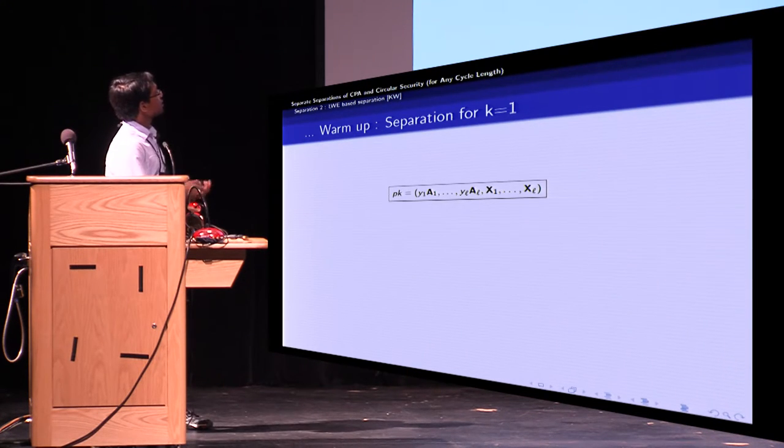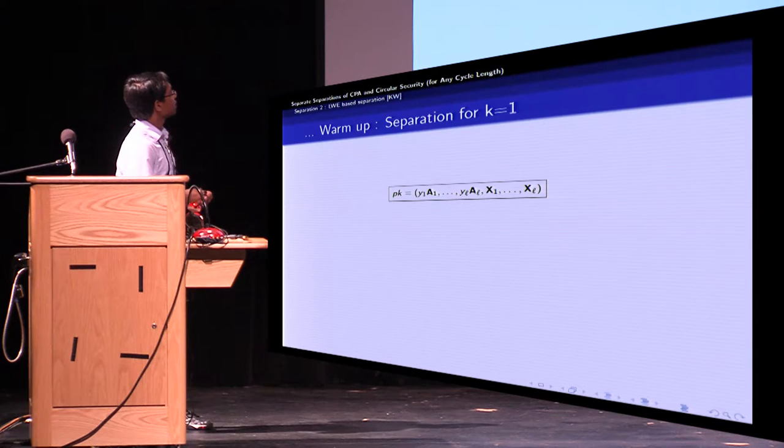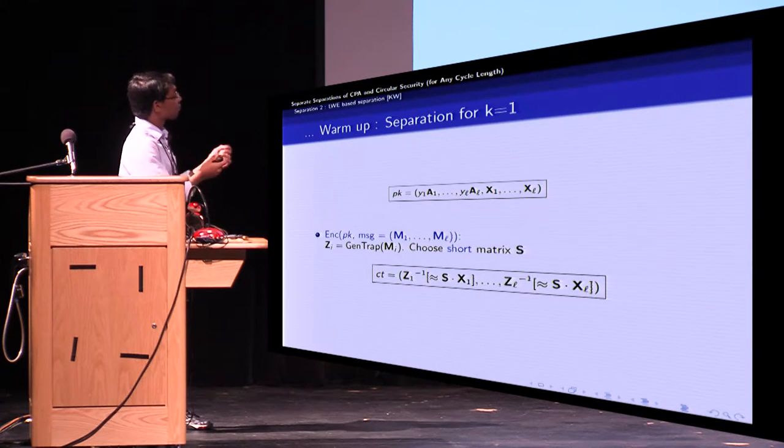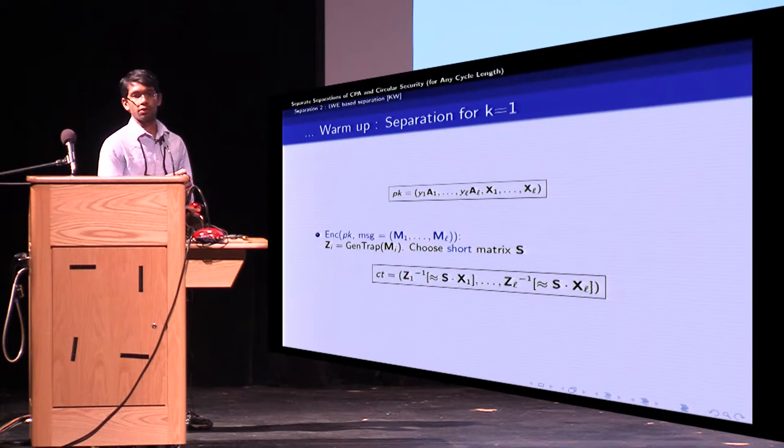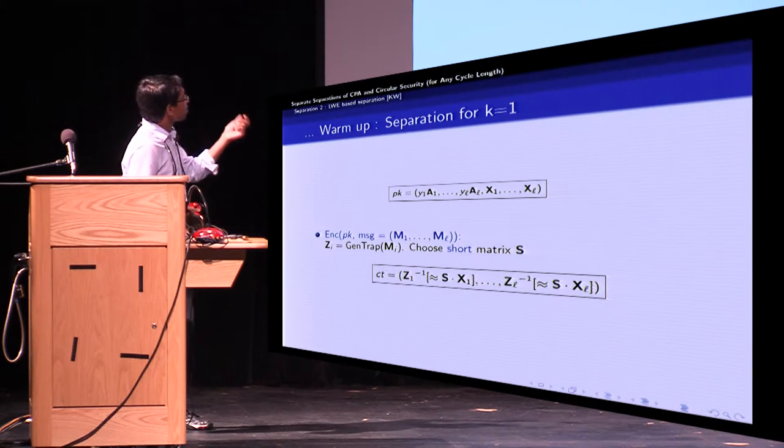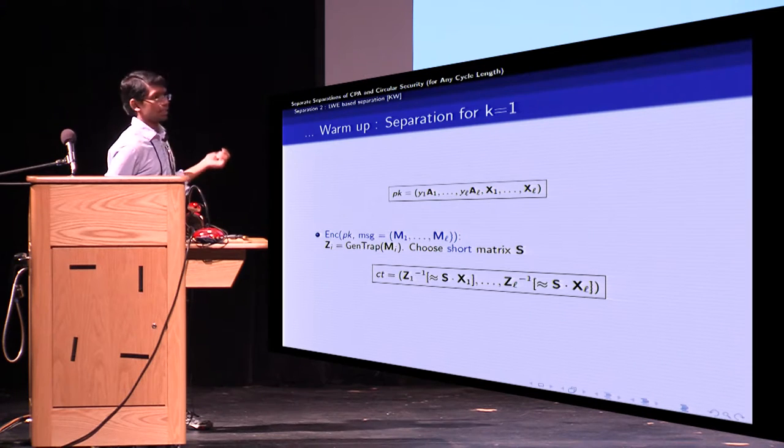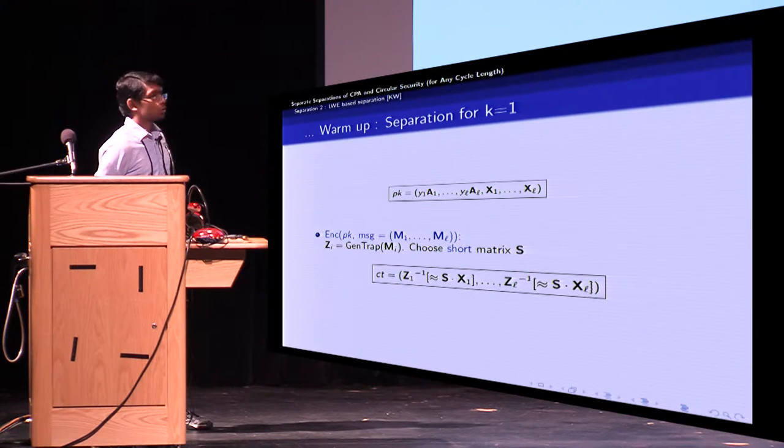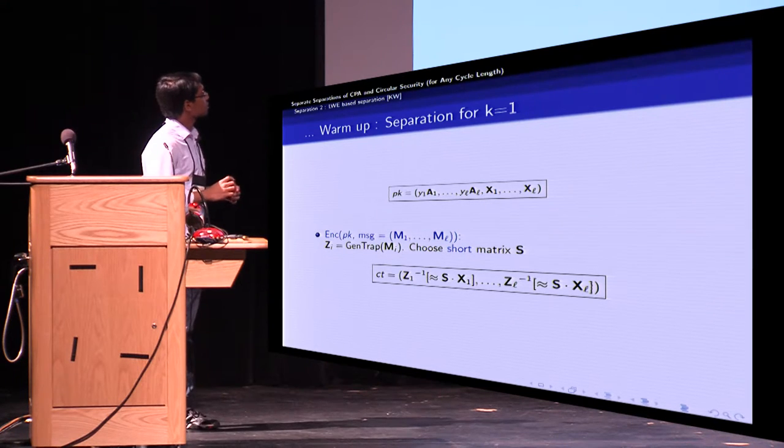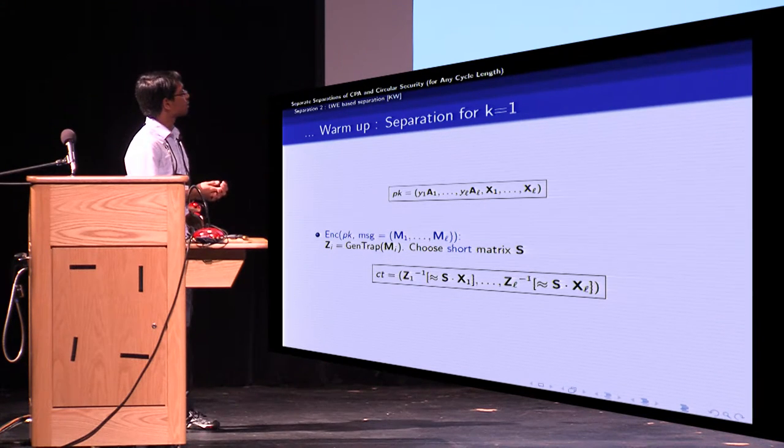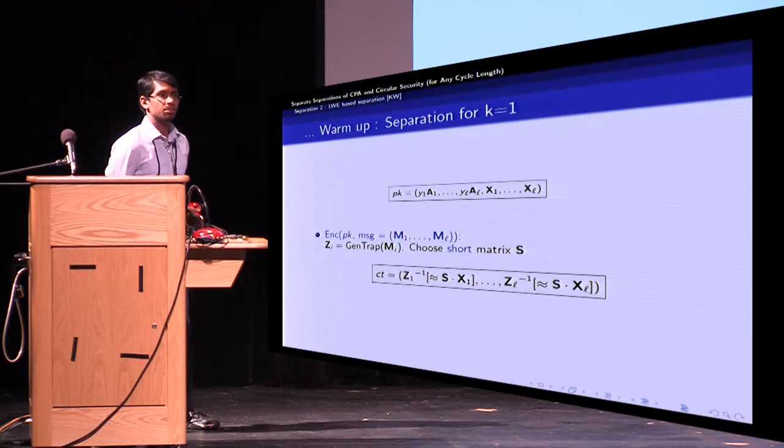Given this public key, let's see how the encryption works. The encryption also consists of, for each message consists of L components, and each of these components M_i gives us a matrix Z_i. Next, you choose a short matrix S, and the ciphertext consists of L components, where the i-th component is Z_i inverse of an approximation of S times X_i.